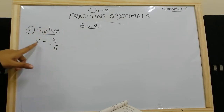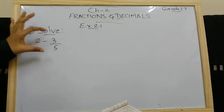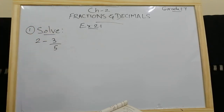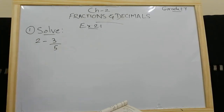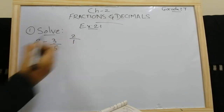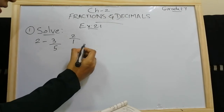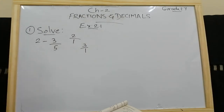Here we need to solve 2 minus 3 by 5. Now how to solve this? Here we can see this is a fraction 3 by 5, but here 2 has no denominator. When there is no denominator for a number — suppose here it is 2 — it means you can take the denominator as 1. Whatever the number is, if there is no denominator, it means it is that number over 1. So here, there is no denominator for 2, meaning it is 2 by 1.